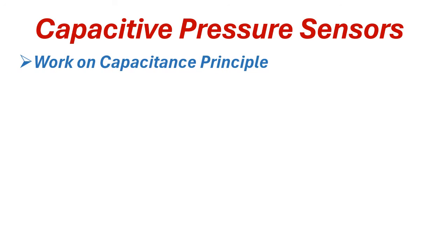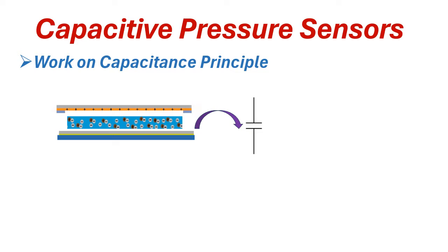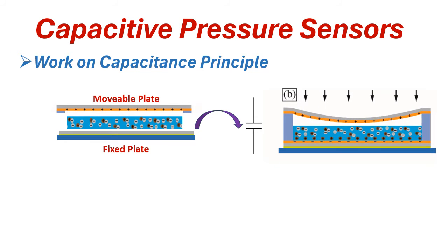Second is the capacitive pressure transmitter. These pressure sensors work on the capacitance principle. They have two parallel conductive plates separated by a small gap, forming a capacitor. One plate is fixed and another plate is attached to the sensing diaphragm. When pressure is applied, the diaphragm is displaced and the distance between the two plates is reduced.